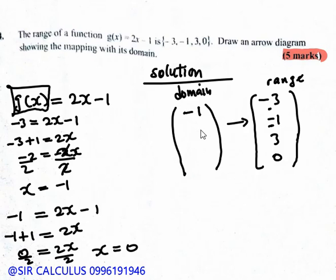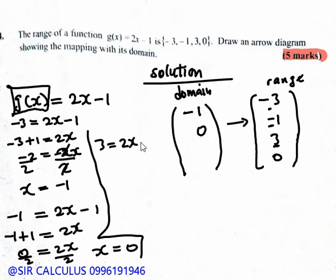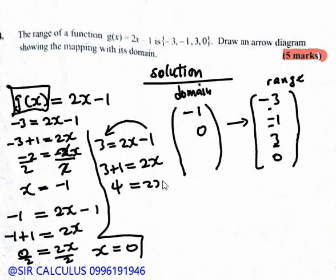Now for g(x) = 3: so 3 = 2x - 1. Collecting like terms: 3 + 1 = 2x, giving 4 = 2x. Dividing both sides by 2, x = 2. So the domain values found so far are -1, 0, and 2.